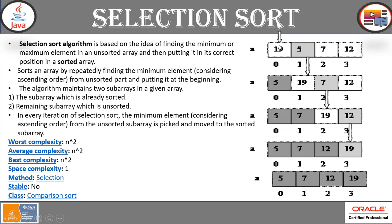Now 19 is compared to the next element. The first element is selected and compared to 5. Since 19 is bigger than 5, it has to switch. In the next iteration, 19 compares to 7 — again bigger, so it switches. Similarly, 19 is compared to 12. Since 12 is less than 19, it switches. In this way, 19 reaches its correct position. This is how selection sort works.